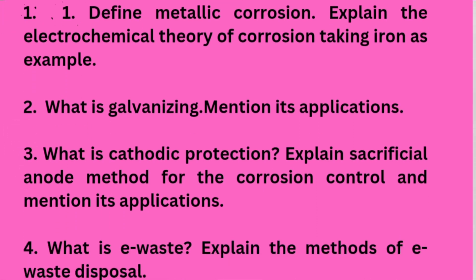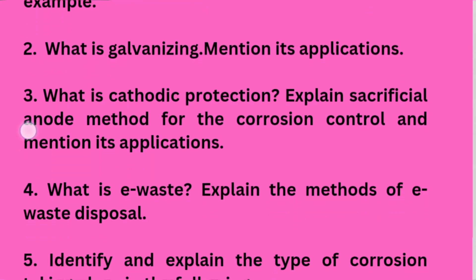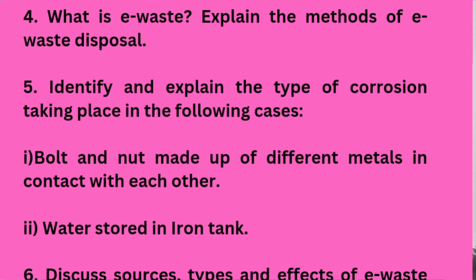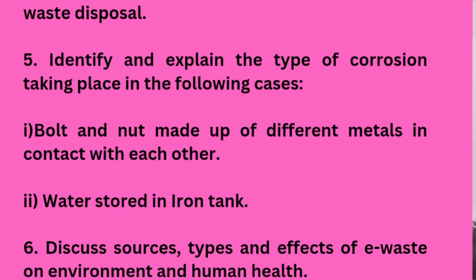Next we have module three. This is super important — the first one is metallic corrosion: explain the electrochemical theory of corrosion. This is always asked in the exam irrespective of the scheme; it was in the 2018 and 2021 schemes and is the most frequently asked question. You can try some examples also — identify and explain the type of corrosion taking place in the following cases; I have taken here bolt and nut, though there may be a screw as well.